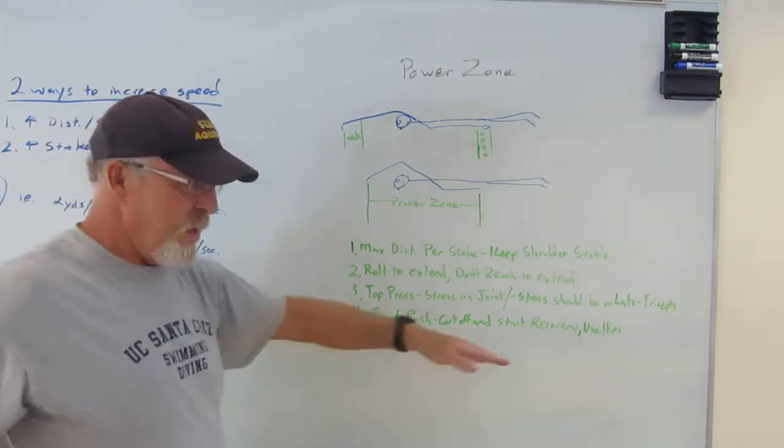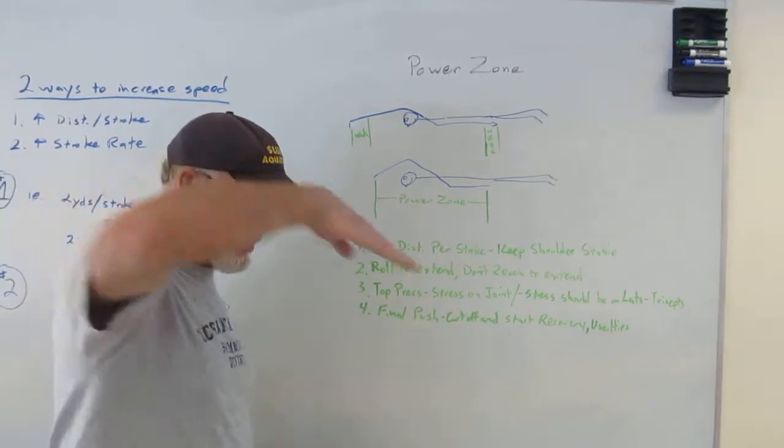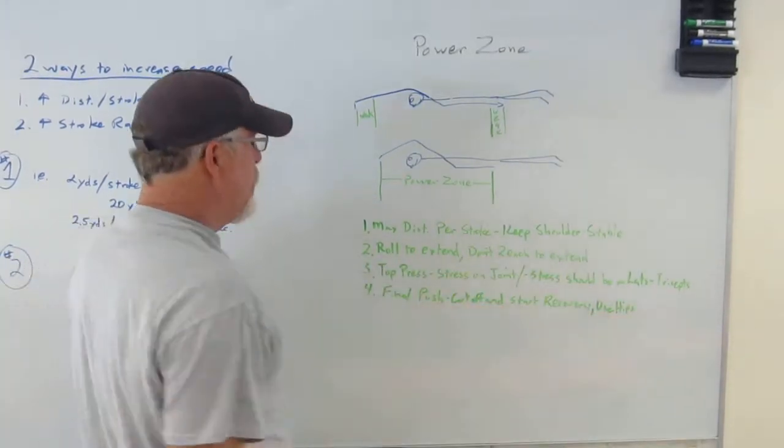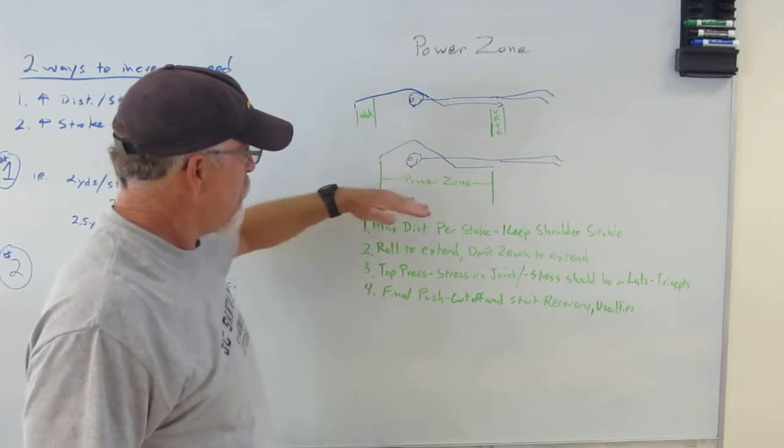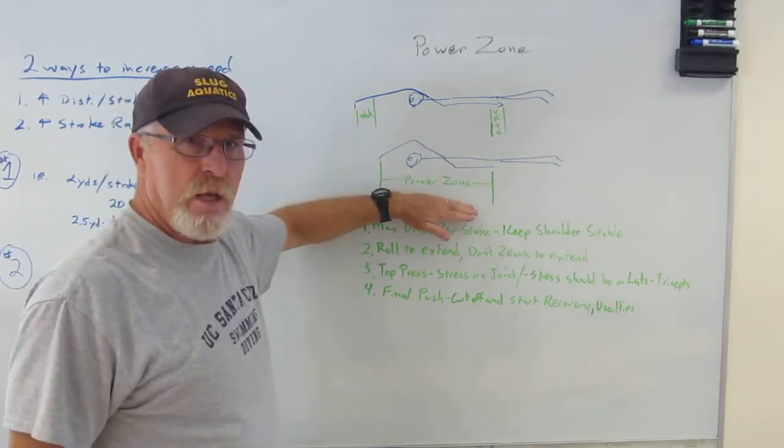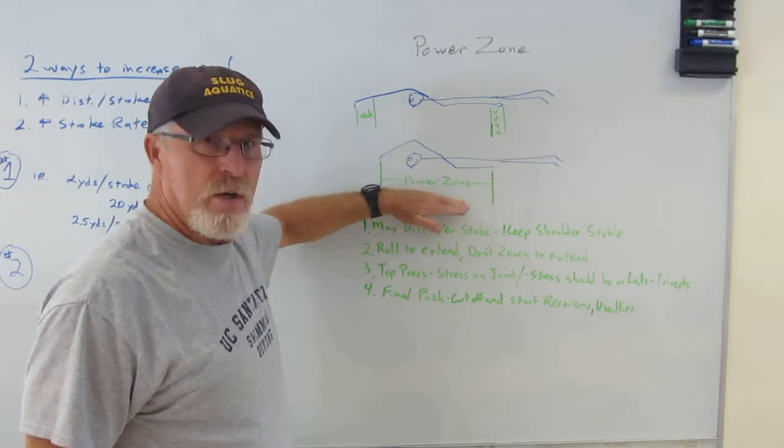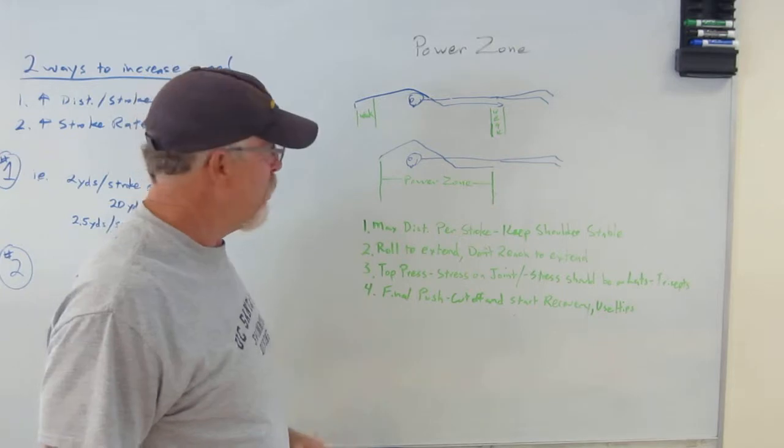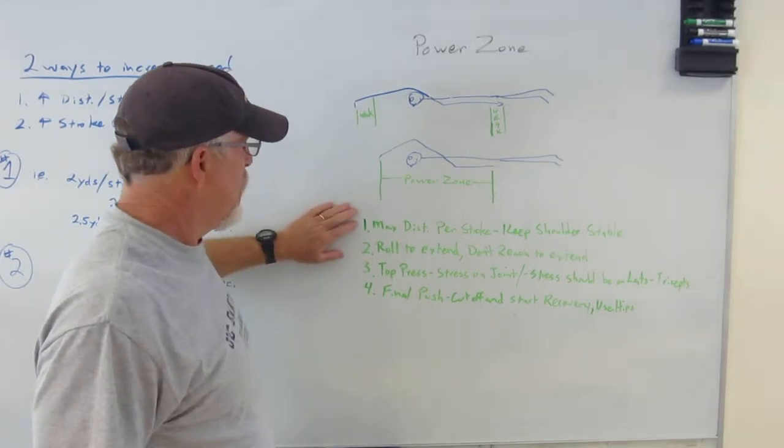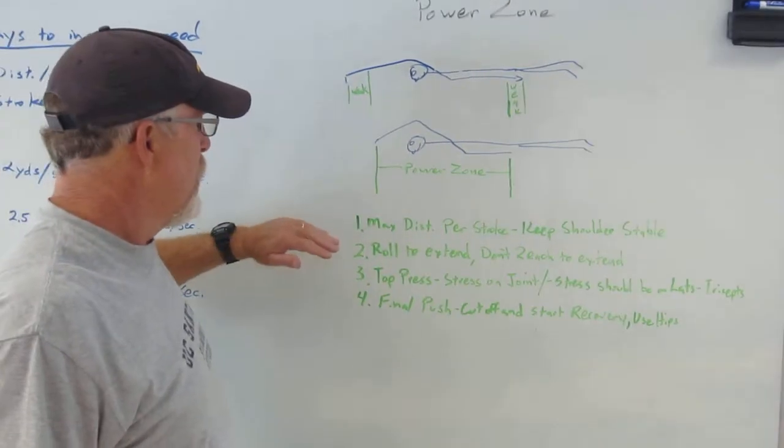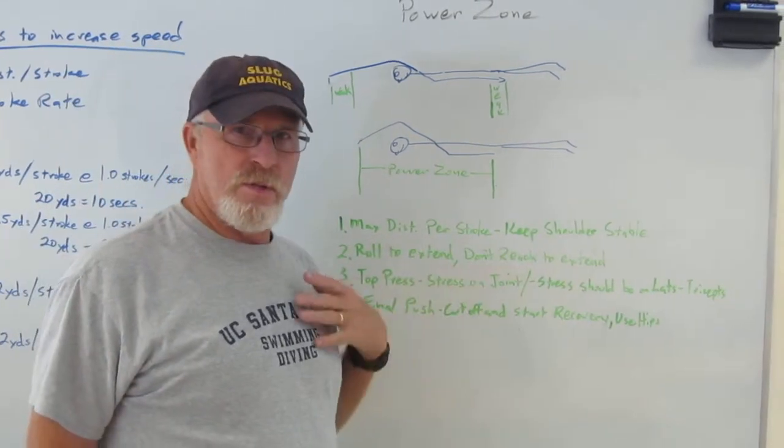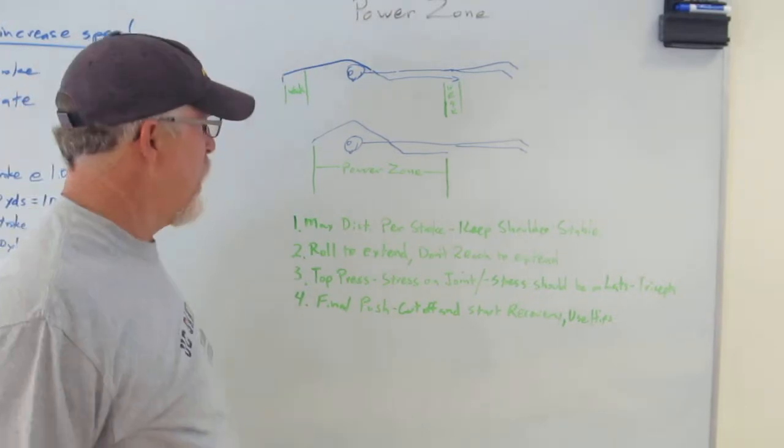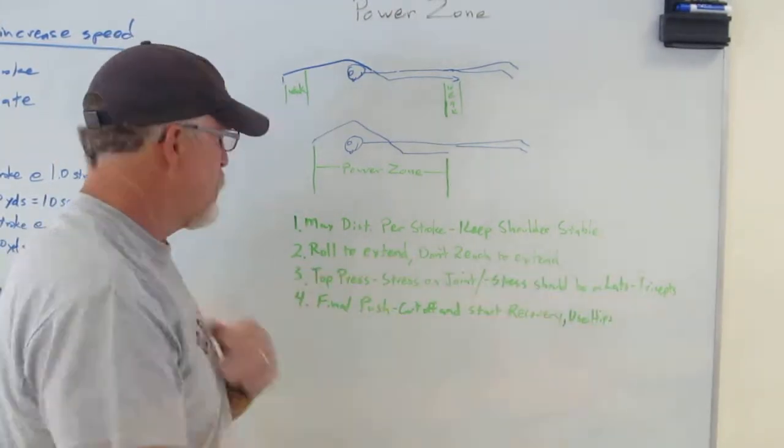So a couple things to keep in mind. Keep the shoulder stable, stay in your power zone, roll to extend, don't overreach and what you'll find is that you can actually begin to get a better distance per stroke by staying in your power zone because you're so much more efficient. So things to keep in mind. Maximum distance per stroke, keep the shoulder stable, don't overreach, don't let the hips slide out of alignment, don't put the stress on the shoulder.